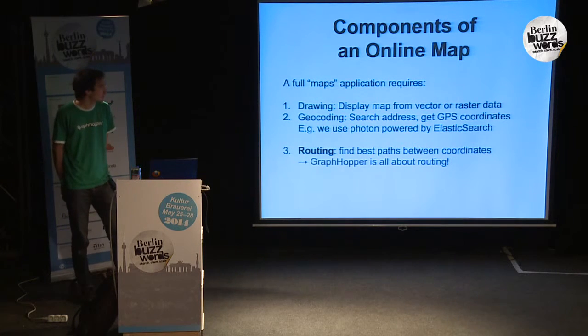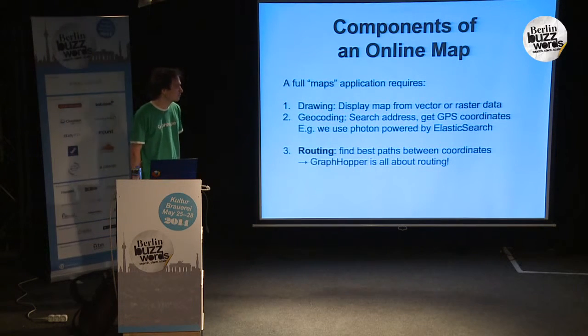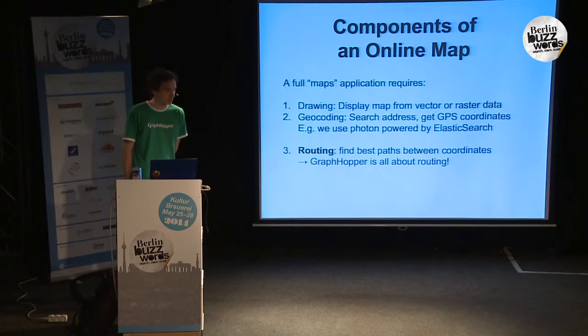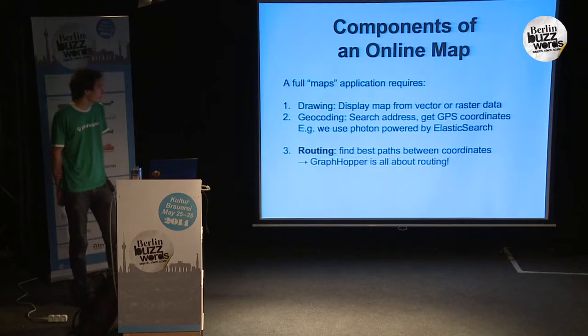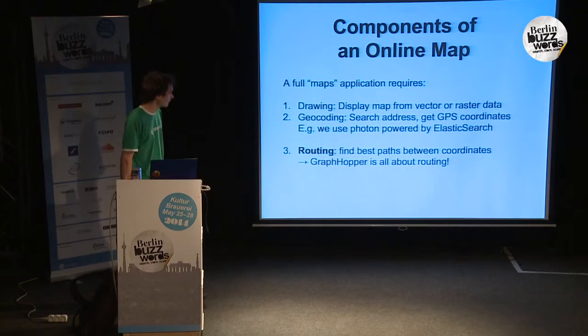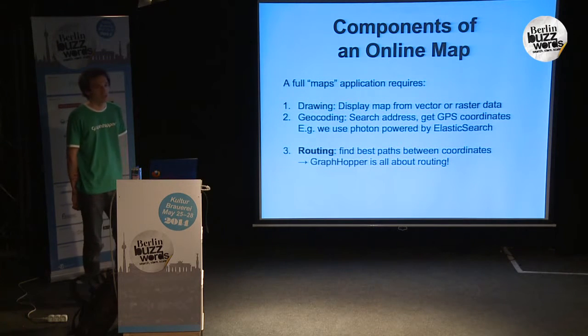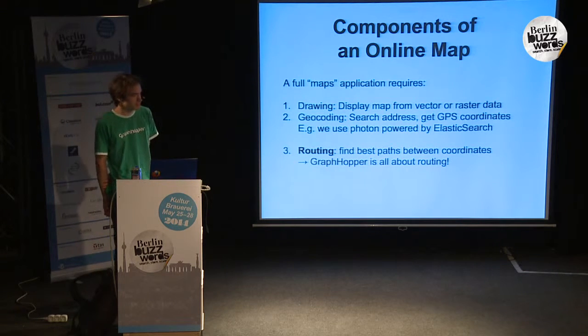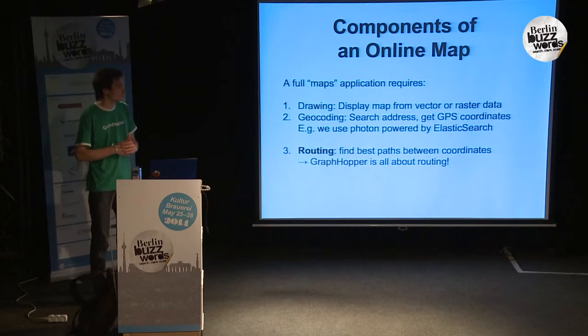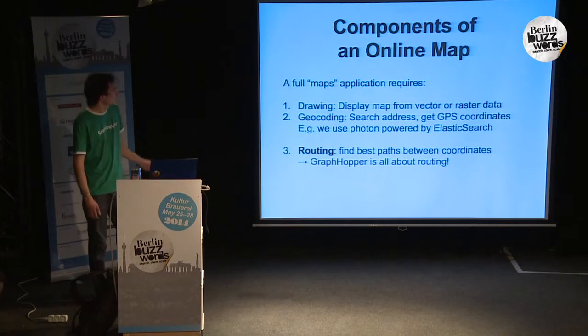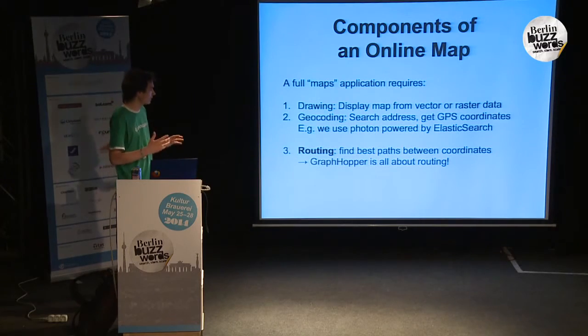First, a bit of introduction. The components of an online map — or a map in your car navigation system — are some drawing components, some geocoding, and the routing component. GraphHopper is all about routing; it finds the best path between coordinates. We have an online demonstration to show the capabilities of GraphHopper, and we use Photon for geocoding, which is powered by Elasticsearch.